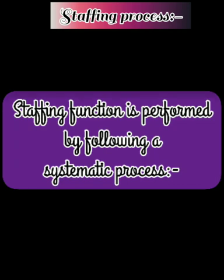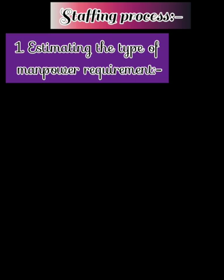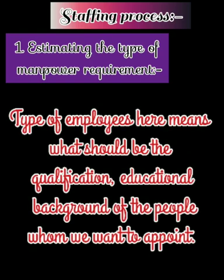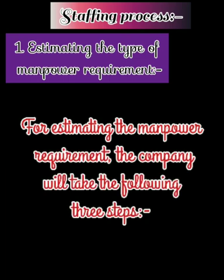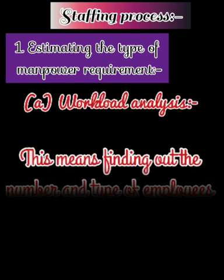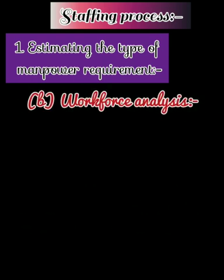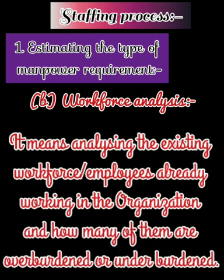The first step is estimating the type of manpower requirement. Human resource planning begins with the estimation of manpower requirement, which means finding out the number and type of employees needed by the organization. Type of employees here means what should be the qualification and educational background of the people we want to appoint. For estimating the manpower requirement, the company will take the following three steps. First, workload analysis — this means finding out the number and type of employees required. Next, workforce analysis — it means analyzing the existing workforce or employees already working in the organization, and how many of them are overburdened or underburdened.